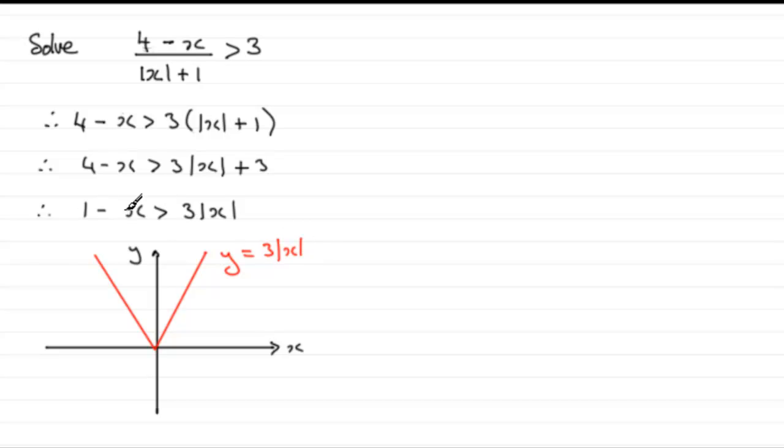Now for the graph of y equals 1 minus x, it'll be a graph that would cross the y axis at 1. It's a straight line graph, linear graph, and it will have a gradient of minus 1. So it's going to look something like this. We'll just mark that in as y equals 1 minus x.